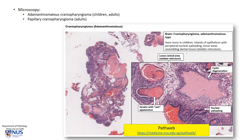Let's take a quick look at the histology. Microscopically, there are actually two major types of craniopharyngioma. The commoner one is the adamantinomatous craniopharyngioma, which usually occurs more frequently in children and can also occur in adults. The less common one is the papillary craniopharyngioma. It is usually the adamantinomatous one that is cystic grossly.